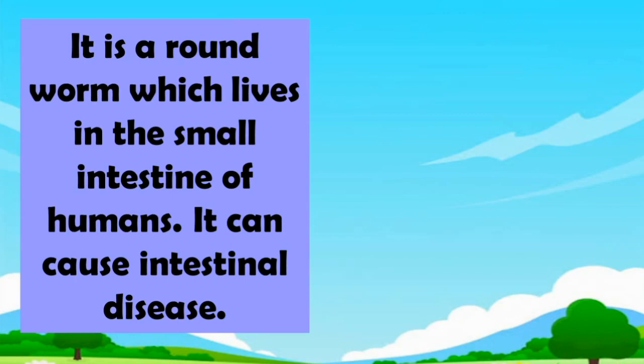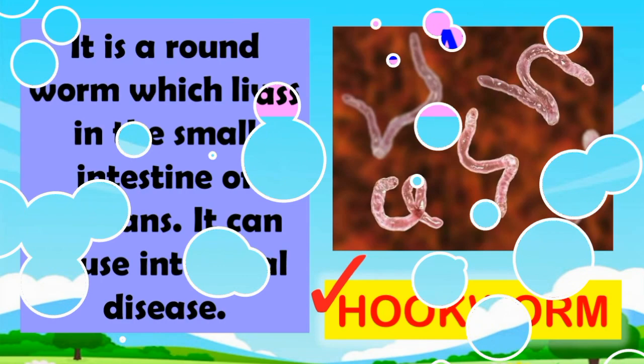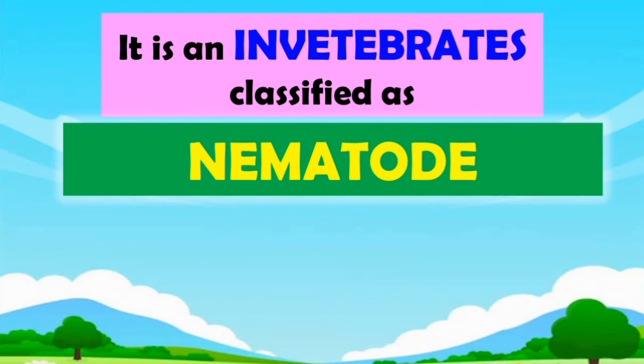Guess what? It is a roundworm which lives in the small intestine of humans. It can cause intestinal disease. What is it? Hookworm! Correct! Hookworm is an invertebrate classified as nematode. It is a roundworm endoparasite.